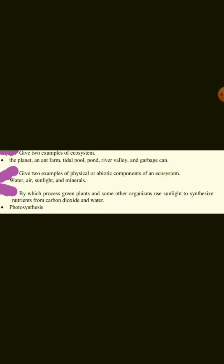By which process do green plants and some other organisms use sunlight to synthesize nutrients from carbon dioxide and water? Photosynthesis.